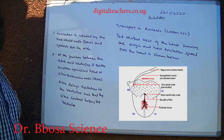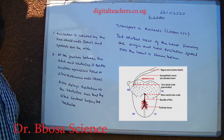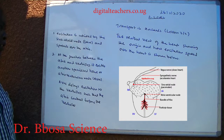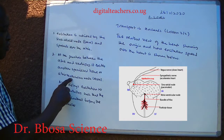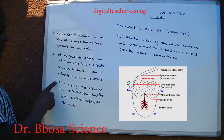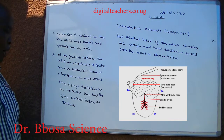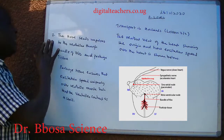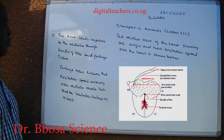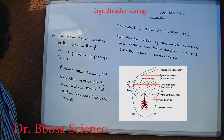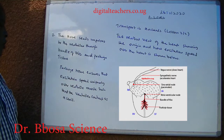Excitation is initiated by the sino-atrial node (SAN) and spreads over the atria. At the junction between the atria and the ventricle, it excites another specialized tissue, the atrio-ventricular node (AVN). The AVN delays excitation of the ventricle such that the atria contract before the ventricle. The AVN sends impulses to the ventricle through the bundle of His and Purkinje tissue, which ensures that excitation spreads uniformly over the ventricle so that the ventricles contract as a unit.